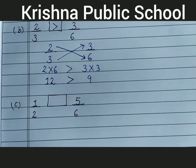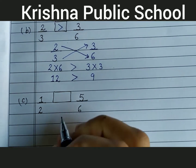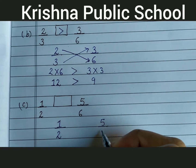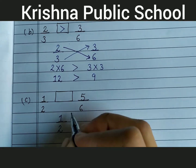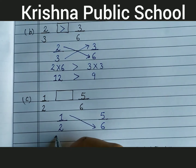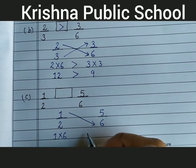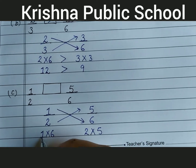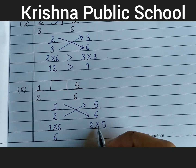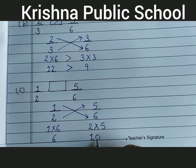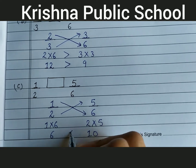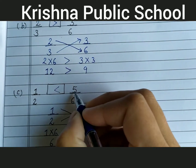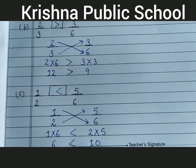Next, compare 1 upon 2 and 5 upon 6 by cross multiplication. 1 multiply 6 equal to 6, 2 multiply 5 equal to 10. 10 is greater than 6, so your answer is 5 upon 6 is greater than 1 upon 2. Show this symbol.